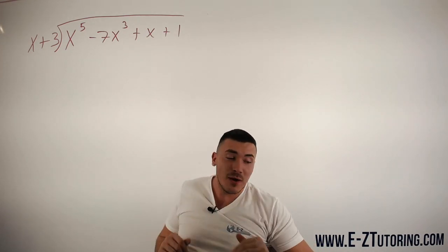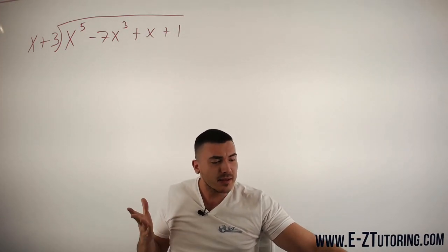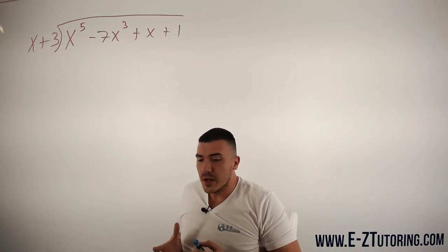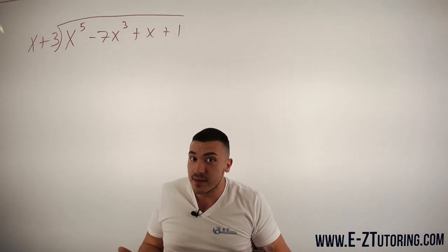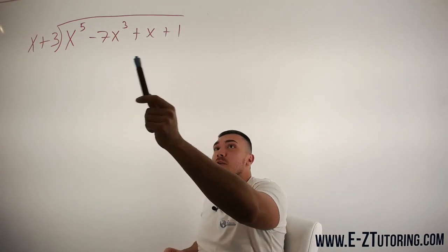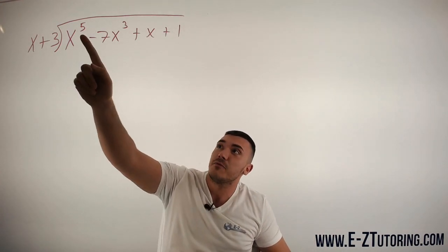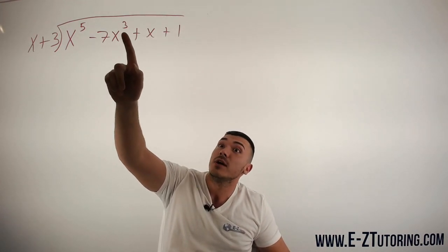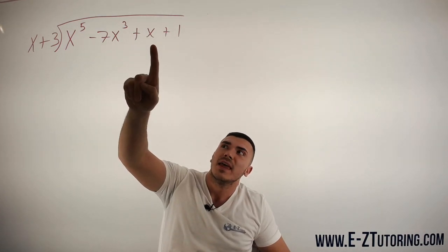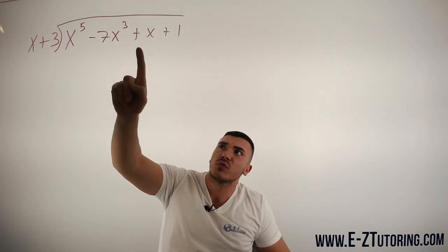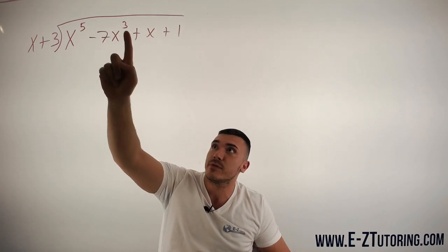But anyways, now into this problem. What does it mean to do long polynomial division with 0x? So you see in this polynomial, it goes from x to the fifth to x to the third to x. It doesn't go 5, 4, 3, 2, 1. It goes 5, 3, 1.